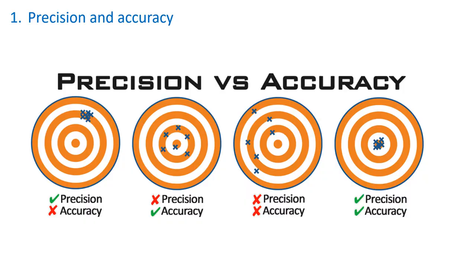Before we proceed, let's do some revision from our measurement unit. It is important to know the difference between precision and accuracy, and in this unit we're also introducing a new term: resolution. This can be very confusing because we can be precise but not accurate, accurate but not precise, neither precise nor accurate, or both precise and accurate.